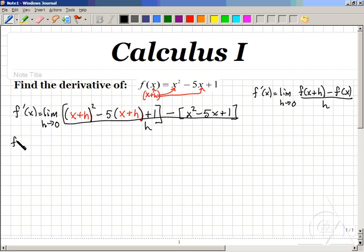Meaning that this will become f prime of x equals limit as h goes to 0 of. In expanding this out, a pair of x plus h multiplied using a shortcut would be x squared plus h squared plus twice their product.